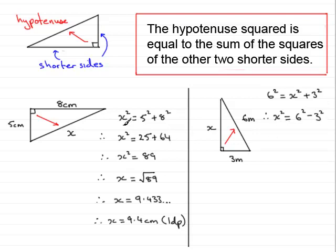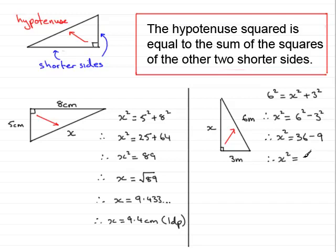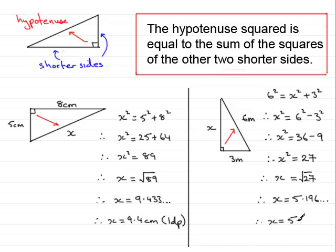In the first example, x squared equals 5 squared plus 8 squared when x was the hypotenuse. But when x is a shorter side, not the hypotenuse, x squared turns out to be the hypotenuse squared minus the other shorter side squared. So x squared equals 6 squared, that's 36, take away 3 squared, that's 9. So 36 minus 9 is 27, meaning x squared equals 27. Taking the square root of both sides, the square root of 27 is 5.196 and so on. Rounding to one decimal place, x equals 5.2 meters. Don't forget to write the one decimal place in.